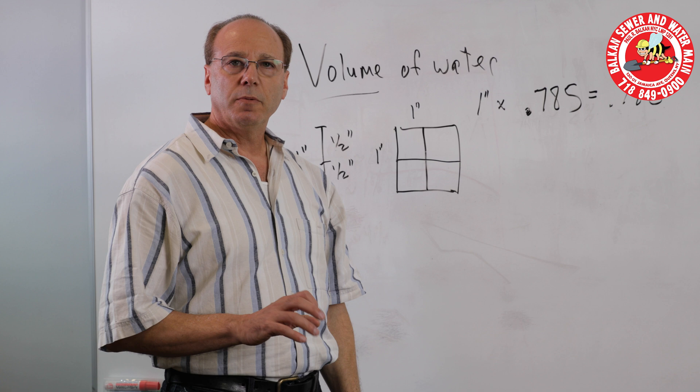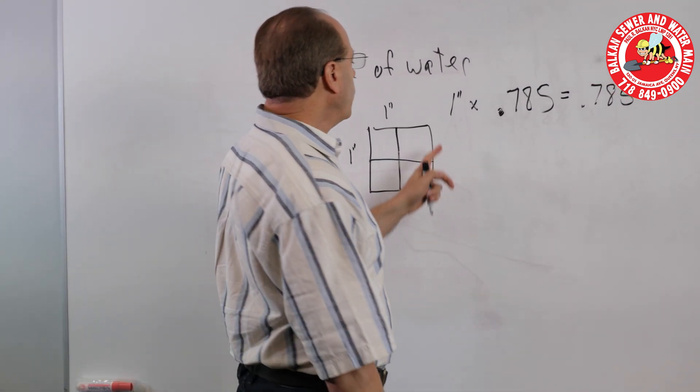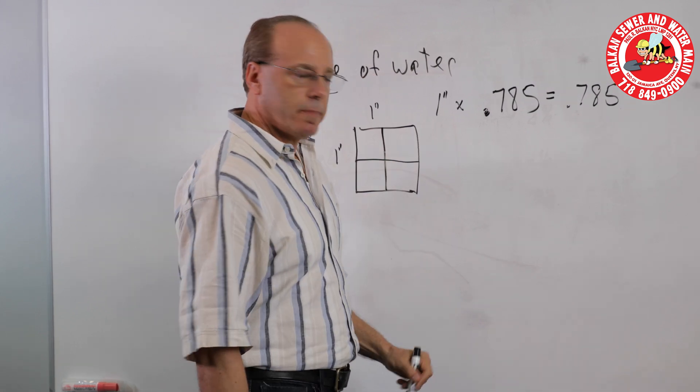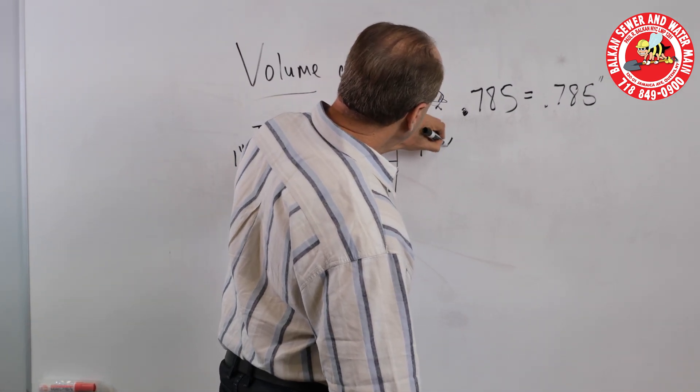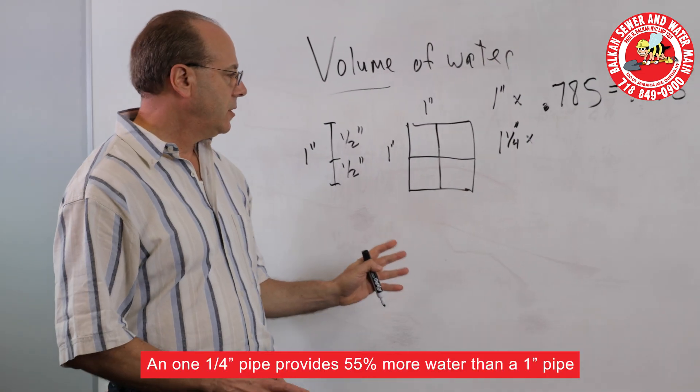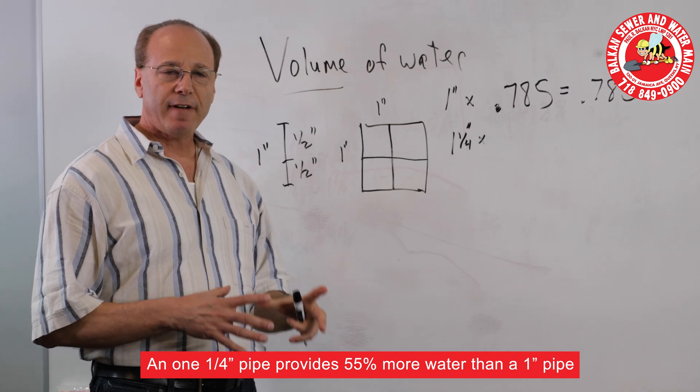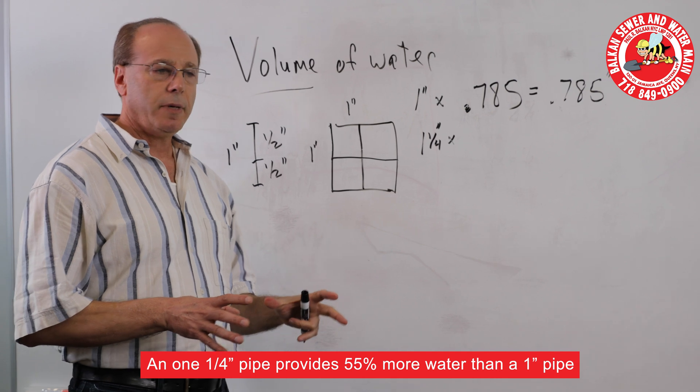Now, what's pretty interesting is when you increase a one inch pipe to inch and a quarter, the magic of volume is you will get approximately 55% more water through an inch and a quarter pipe than you get through a one inch pipe.